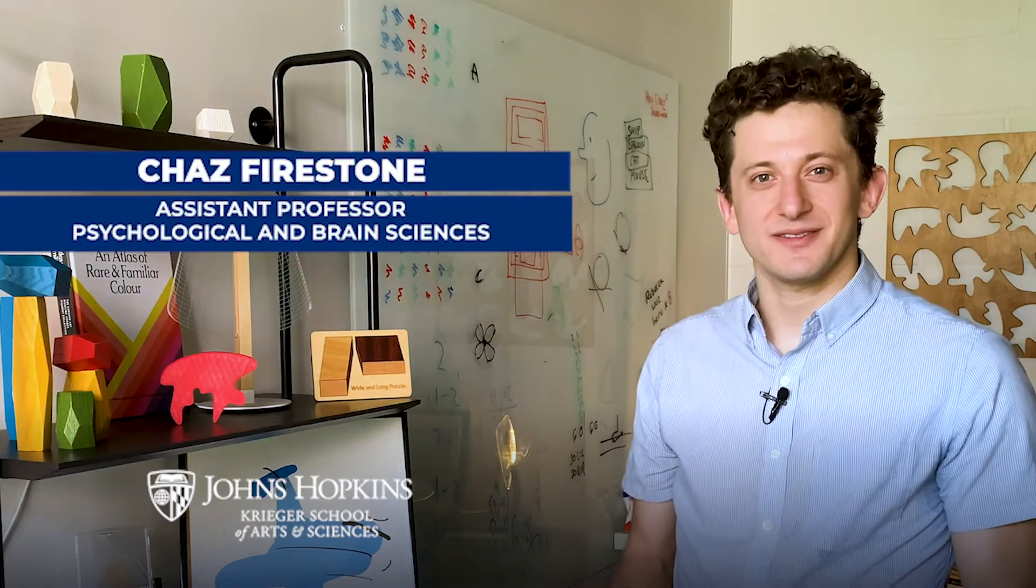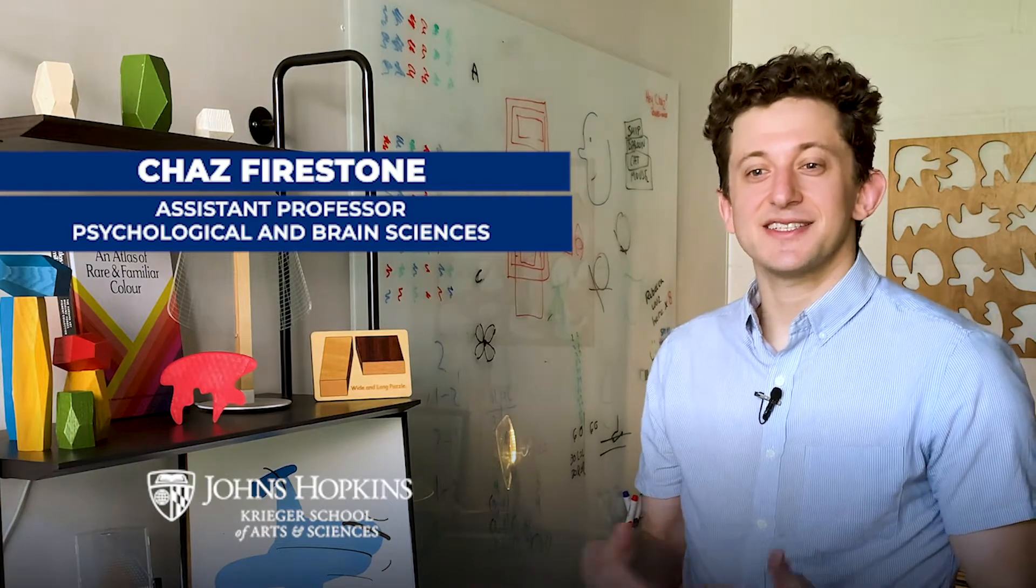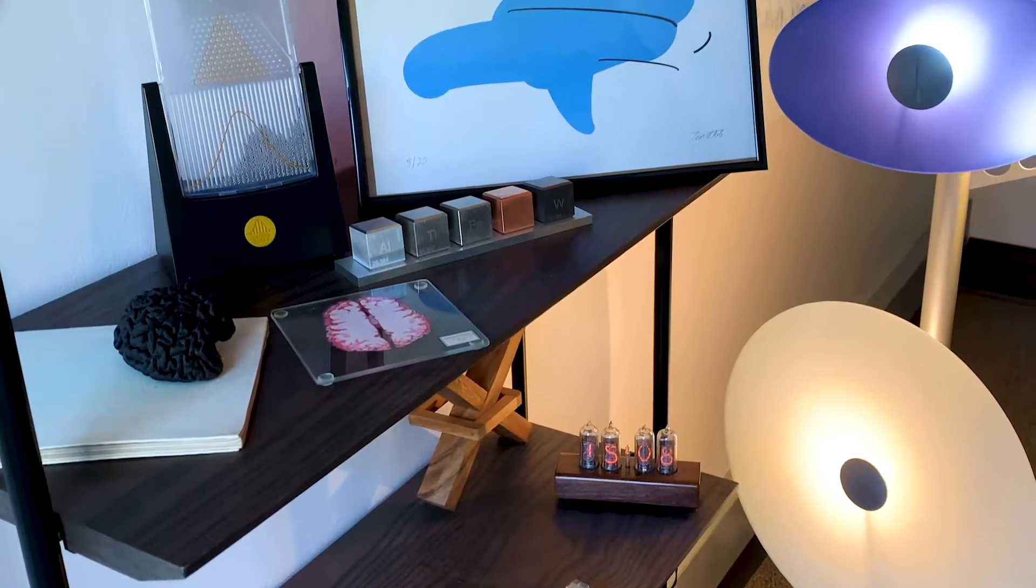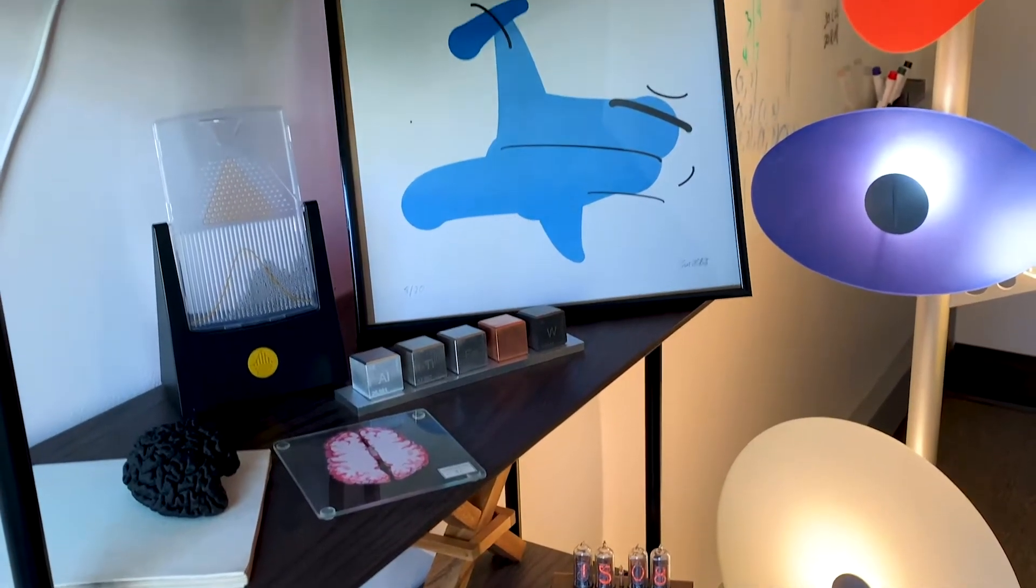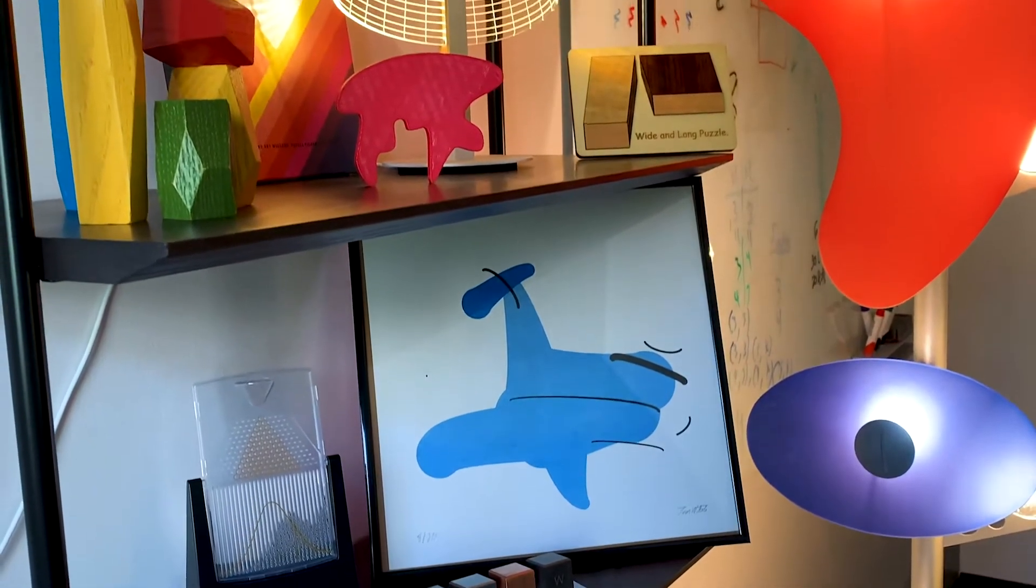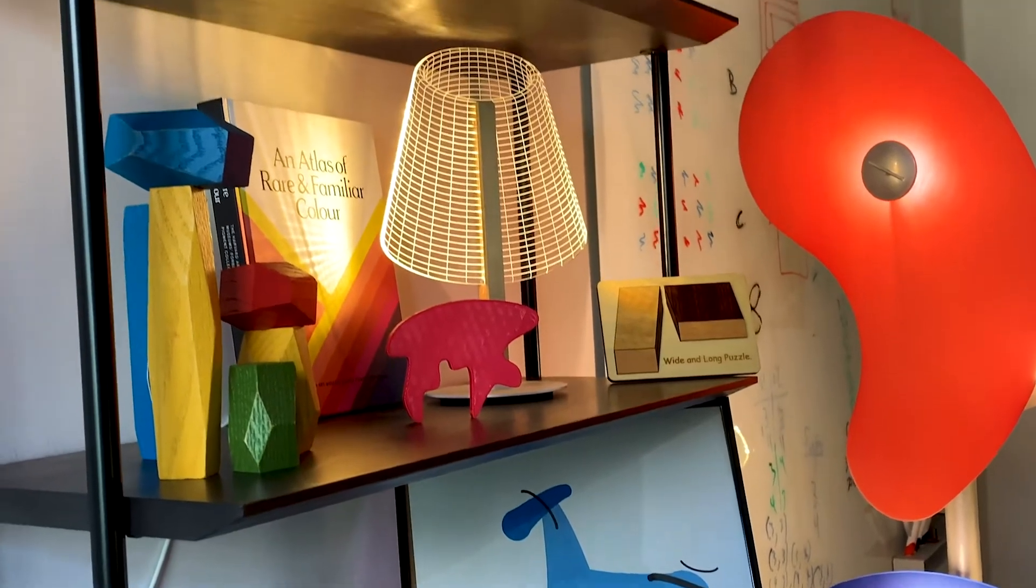My lab studies visual perception, which is the study of how we see the world around us. Since it's the study of the world around us, I like to surround myself with objects and materials that inspire our research. A lot of the objects I have on my shelf are things that are connected to our research or to visual perception in one way or another.